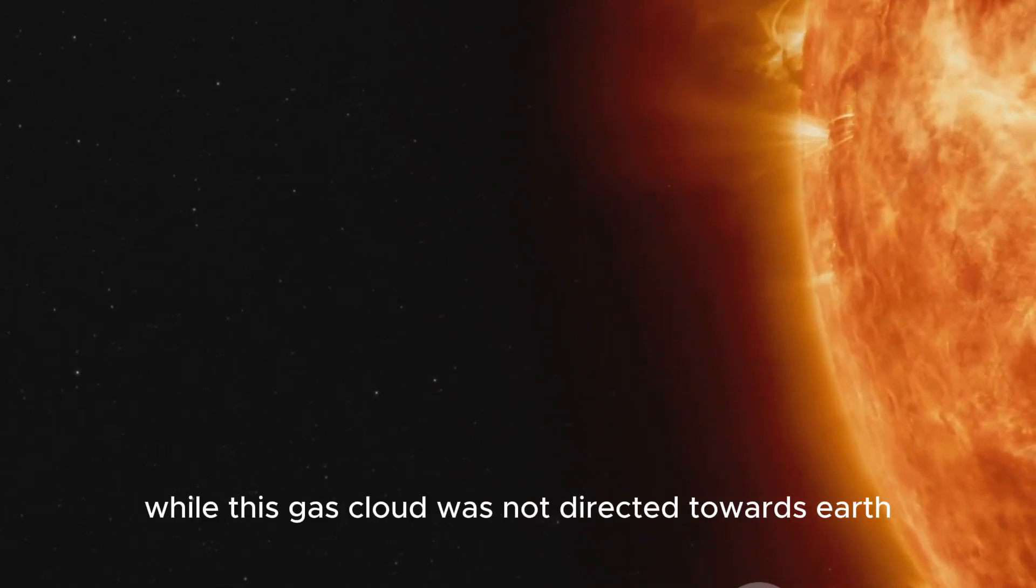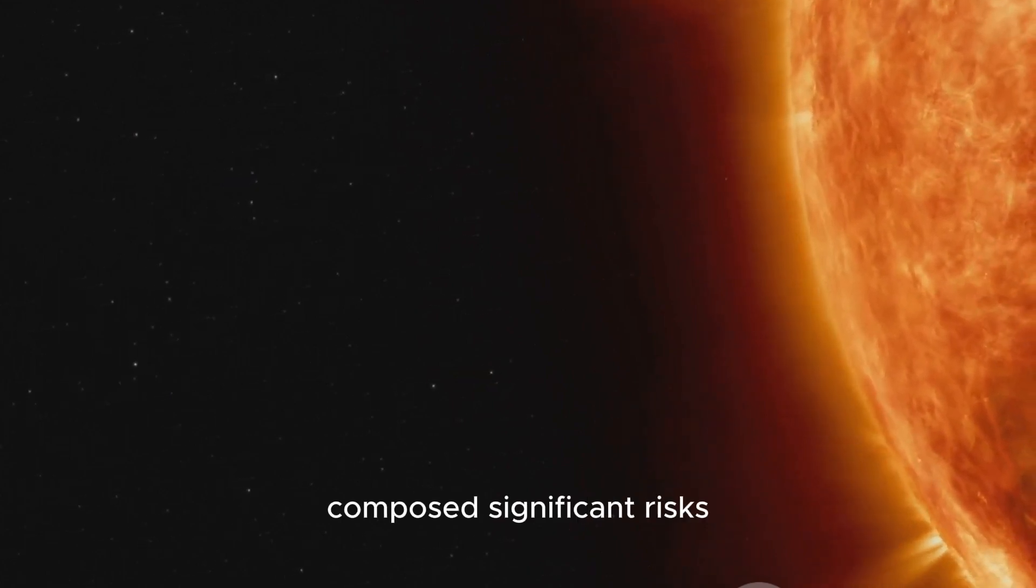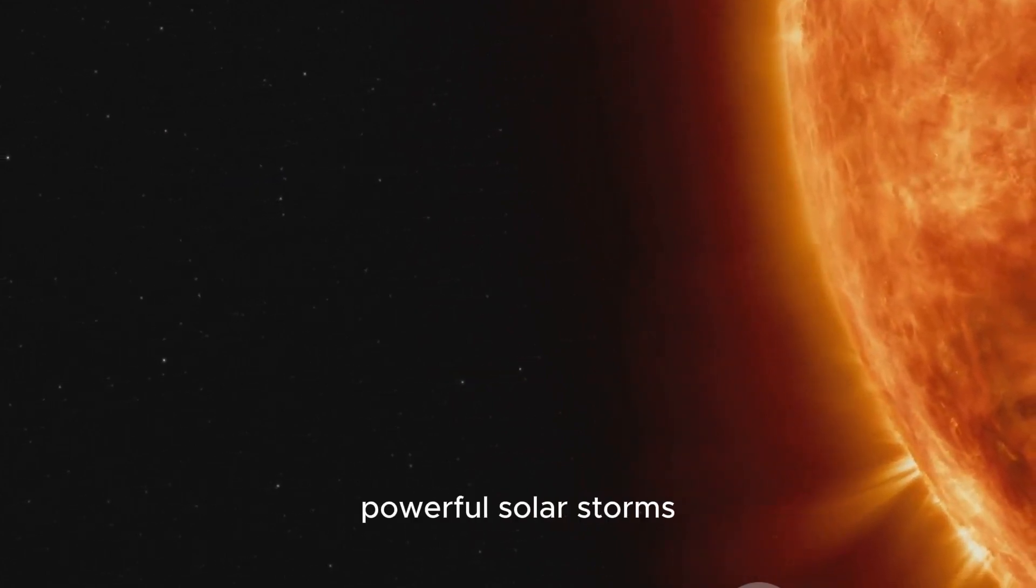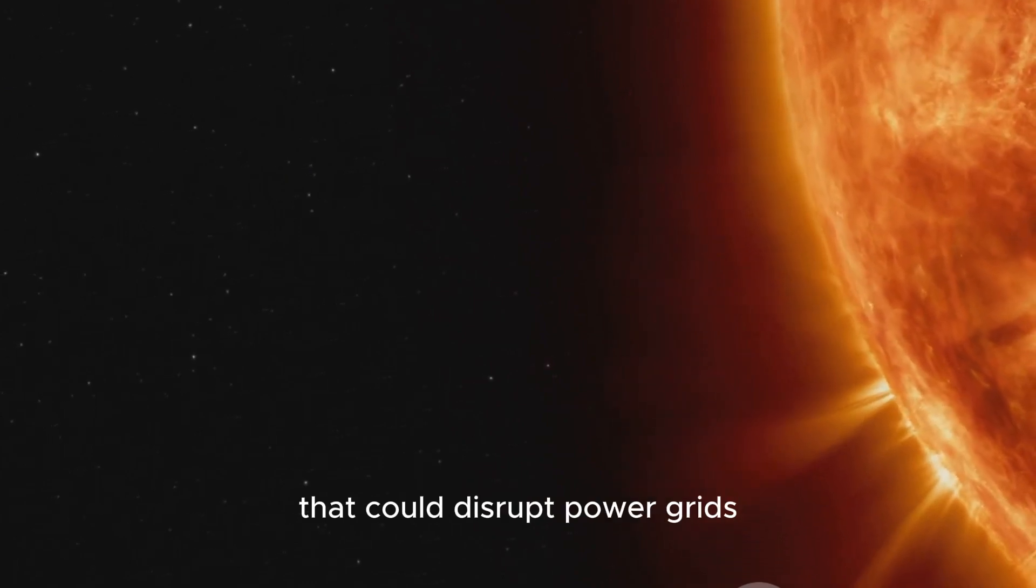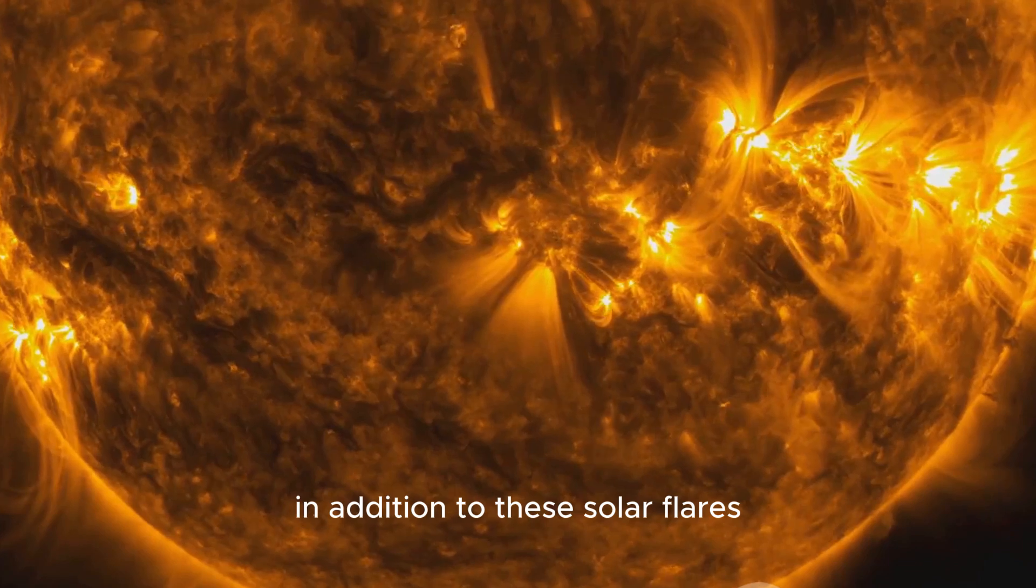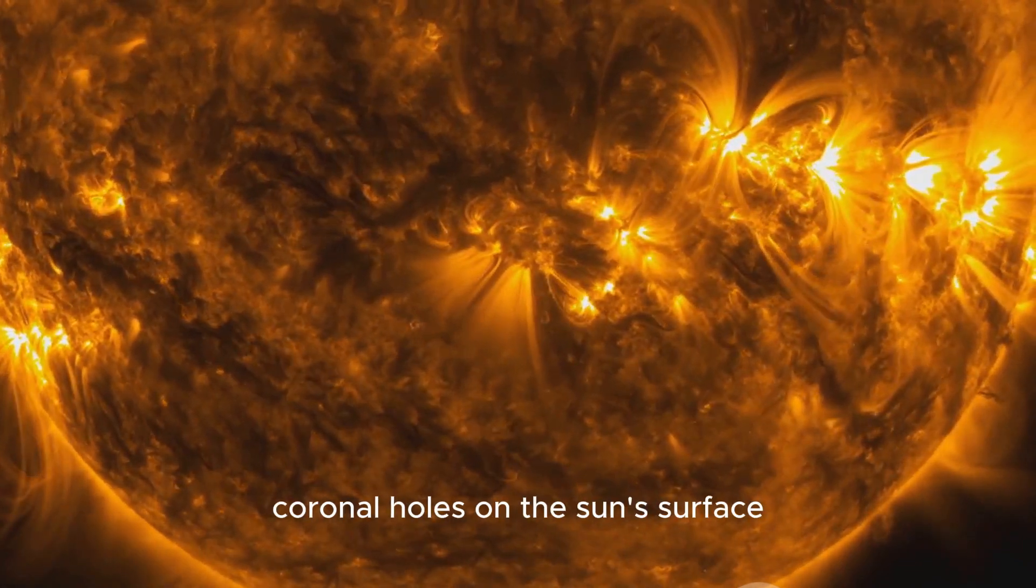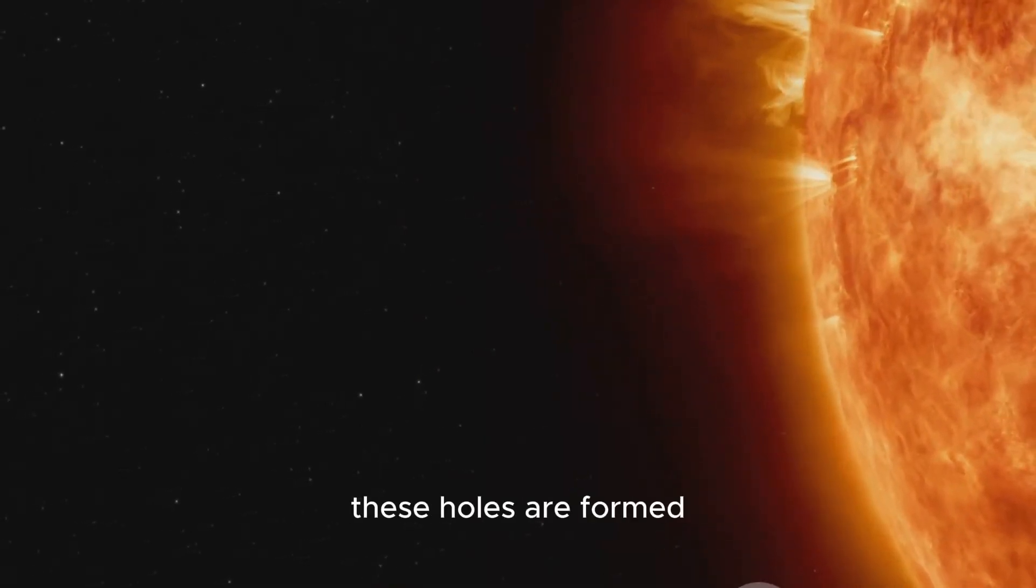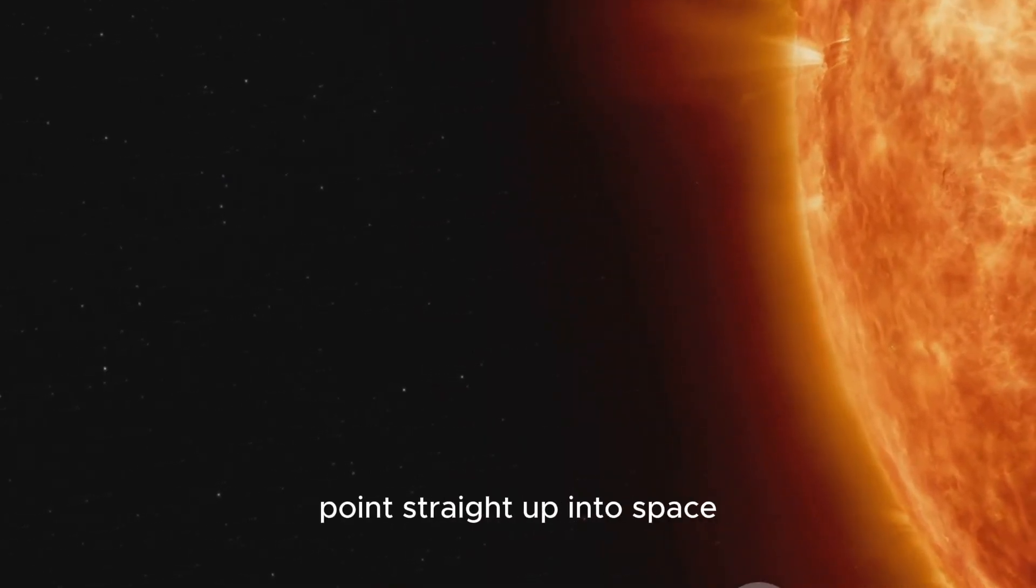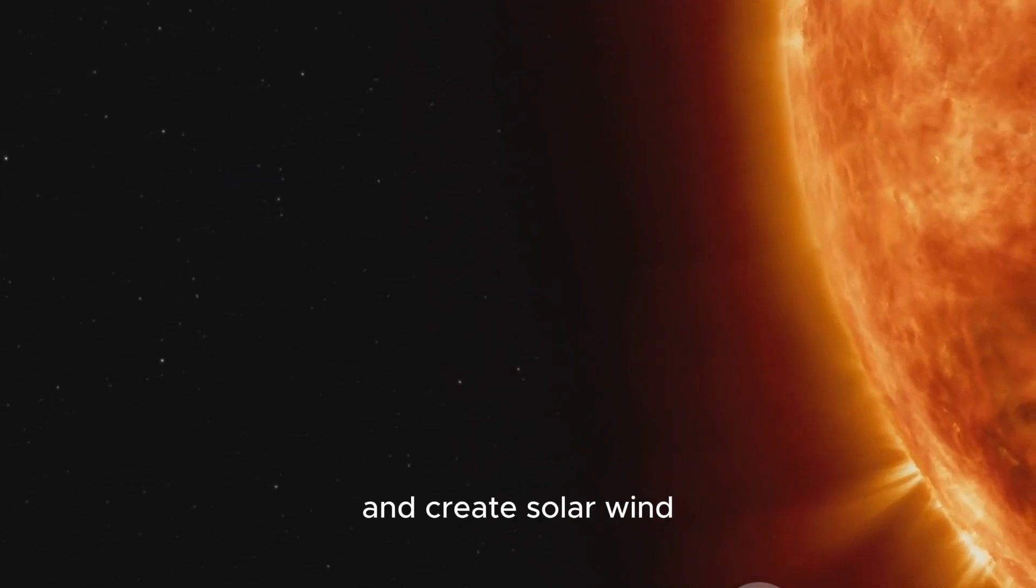While this gas cloud was not directed towards Earth, such heightened solar activity can pose significant risks such as rare, powerful solar storms that could disrupt power grids and endanger deep space astronauts. In addition to these solar flares, we're also noticing the formation of large coronal holes on the sun's surface. These holes are formed when magnetic fields on the sun's surface point straight up into space, allowing plasma to escape and create solar wind.